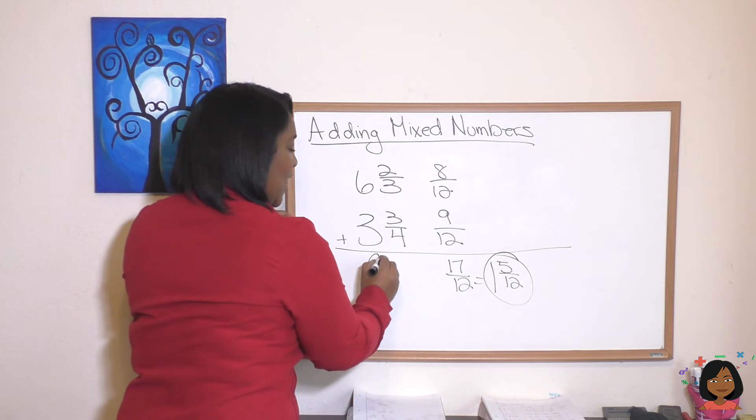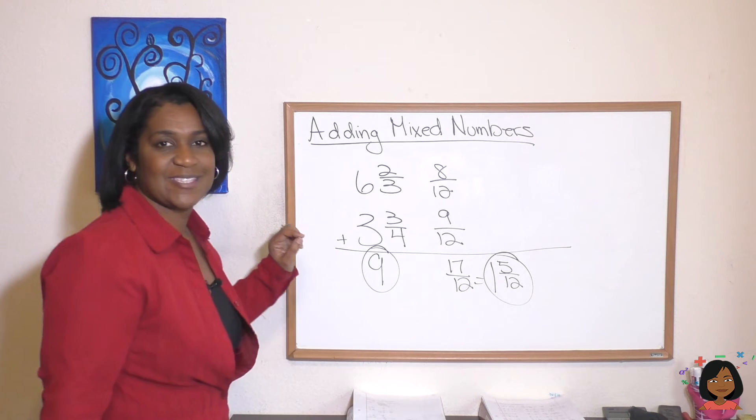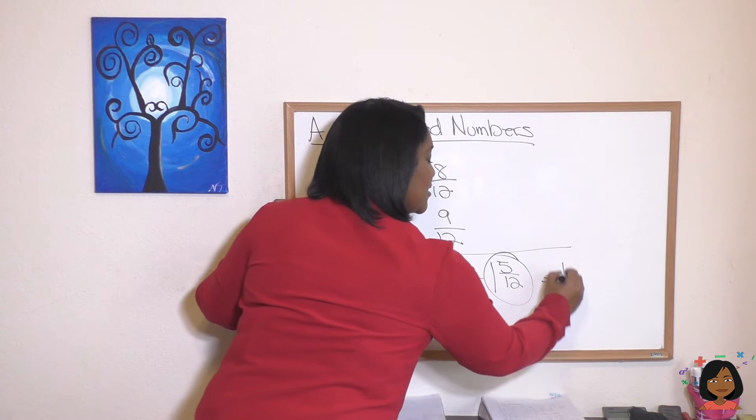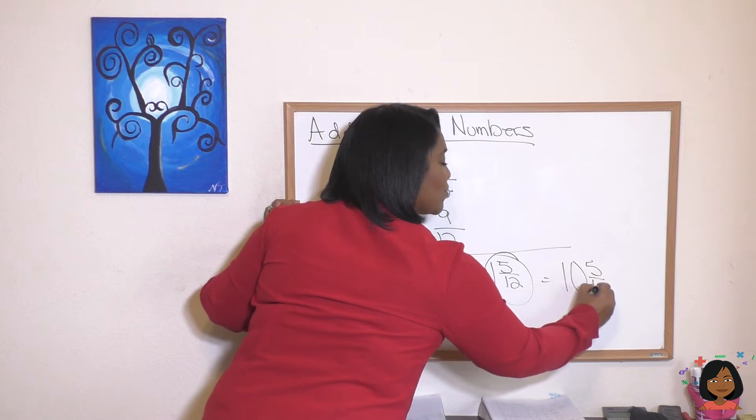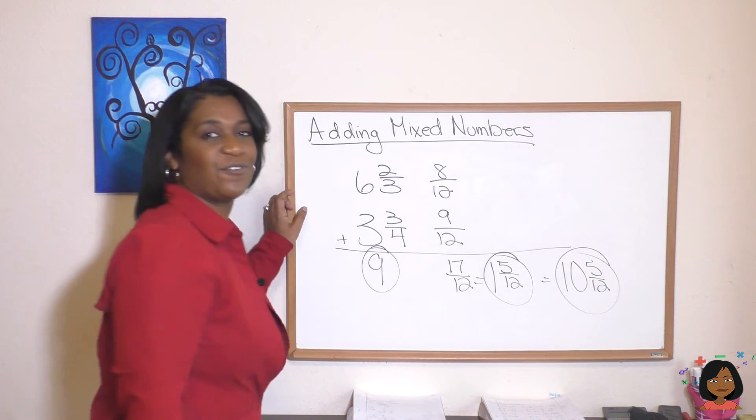Six plus three is nine. And now we've got to add these together. Nine plus one is 10 5/12. That is my full answer.